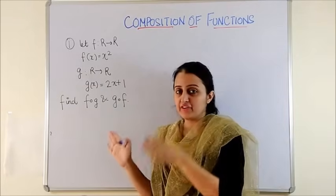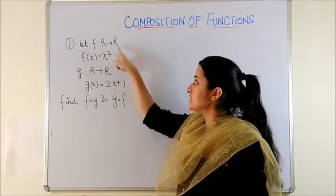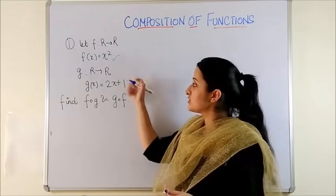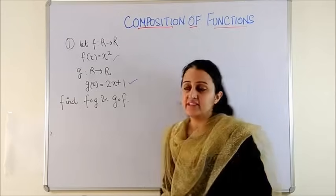So looking at the very first question, your function F is defined from reals to reals as Fx equal to x square. G is also a real function defined this way. We have to find F of G and G of F.